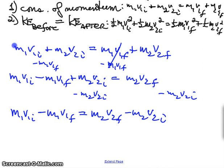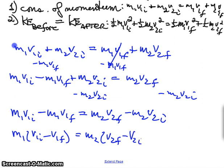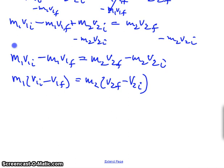Now you can see I've lumped together similar masses on each side of the equation. I'm going to factor out the mass, so I get M1 times (V1 initial minus V1 final) equals M2 times (V2 final minus V2 initial). I've gone about as far as I can go there — I've got M1 times a factor of the change in velocity, and M2 times the change in velocity of object 2.